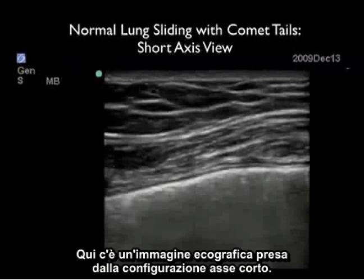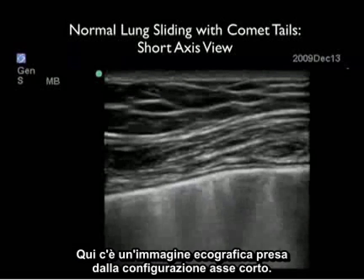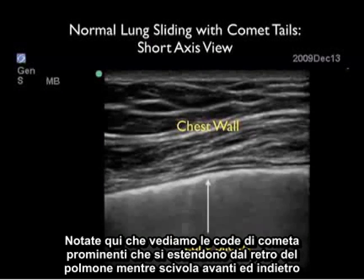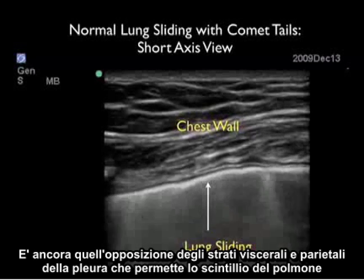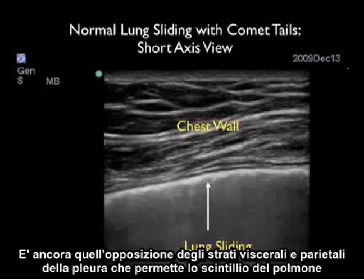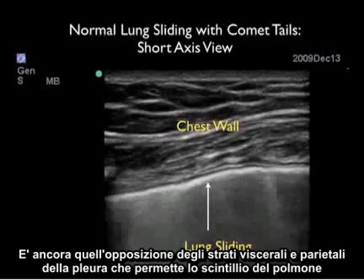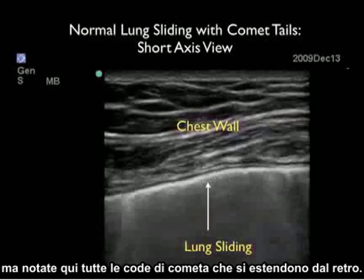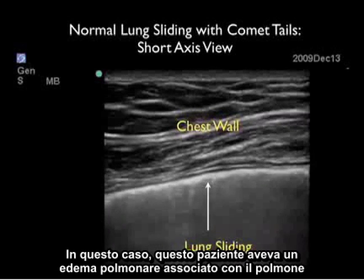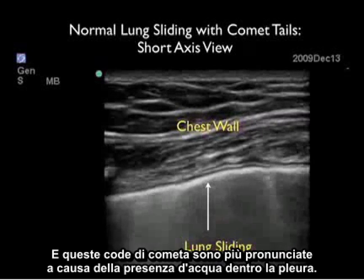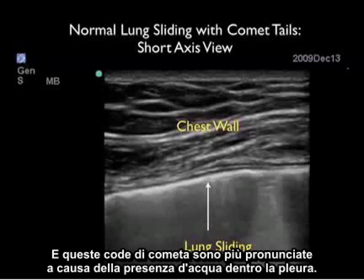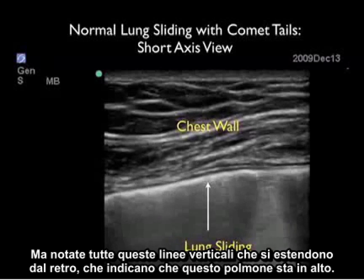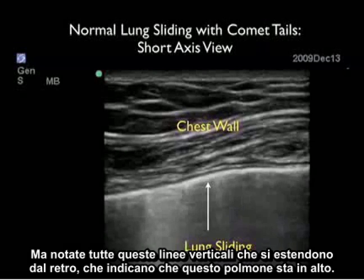Here's another ultrasound image taken from the short axis configuration. We see very prominent comet tails coming off the back of the lung as it slides back and forth. It's the opposition of the parietal and visceral layers of the pleura that allows the lung's shimmering. In this case, this patient had some pulmonary edema associated with the lung, and these comet tails are more pronounced due to the presence of water within the pleura. But notice all these vertical lines coming off the back, telling us this lung is up.